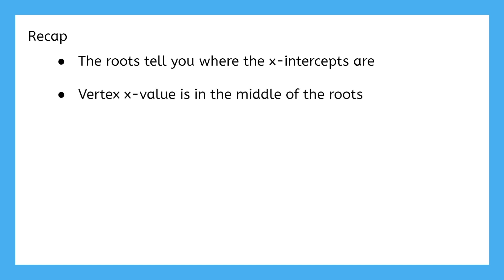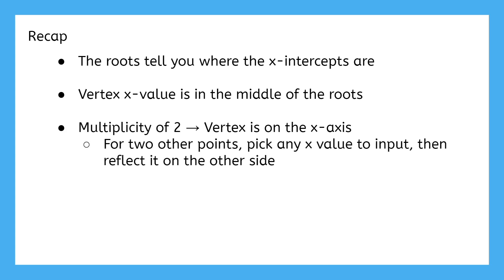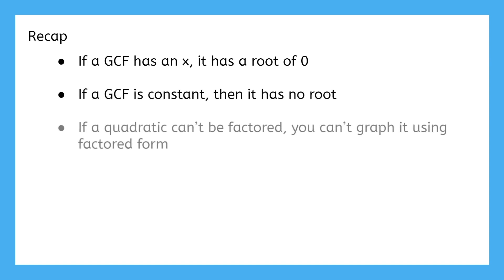Let's run through everything one last time. The roots tell you where the x-intercepts are. The vertex is in the middle of those roots. Sometimes you get a root with multiplicity two which means the vertex is on the x-axis and for more points you can choose any x value to input and then mirror it on the other side of the line of symmetry. If a GCF has an x in it, then the root of that factor is zero. If a GCF is just a constant, it's not a root. And sometimes a quadratic is unfactorable, so you can't graph it using this method.